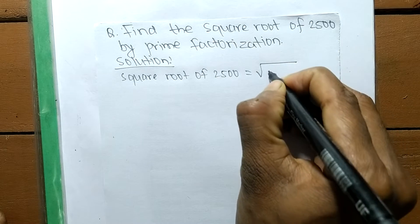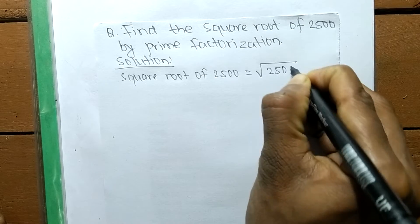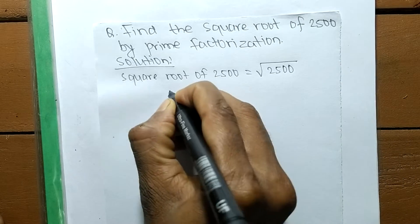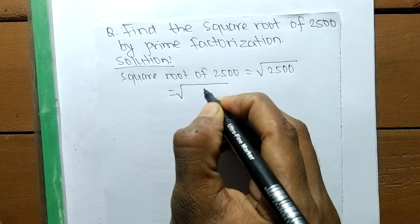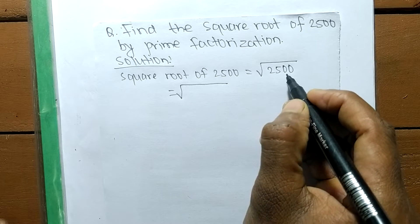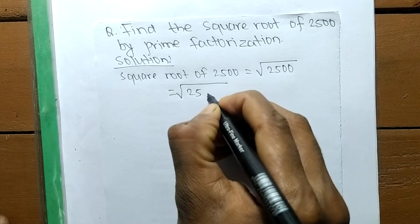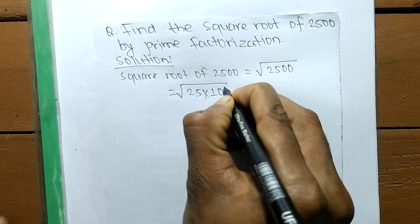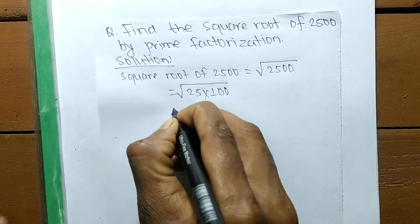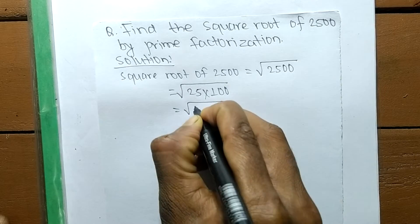We can write 2500. When finding a square root and the numbers contain zeros, we can separate the numbers and zeros separately, so 25 into 100. Now 25 means it is 5 times 5 when we factorize.